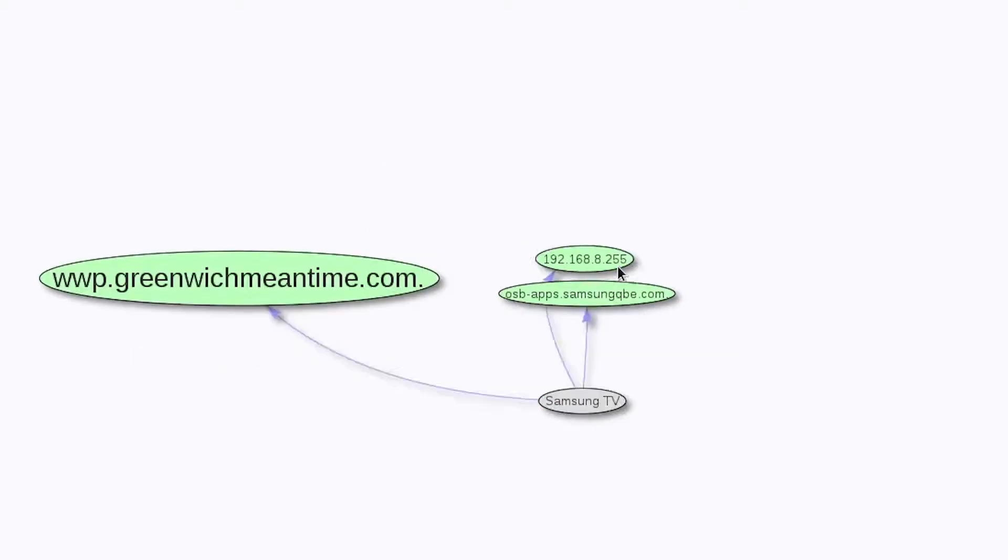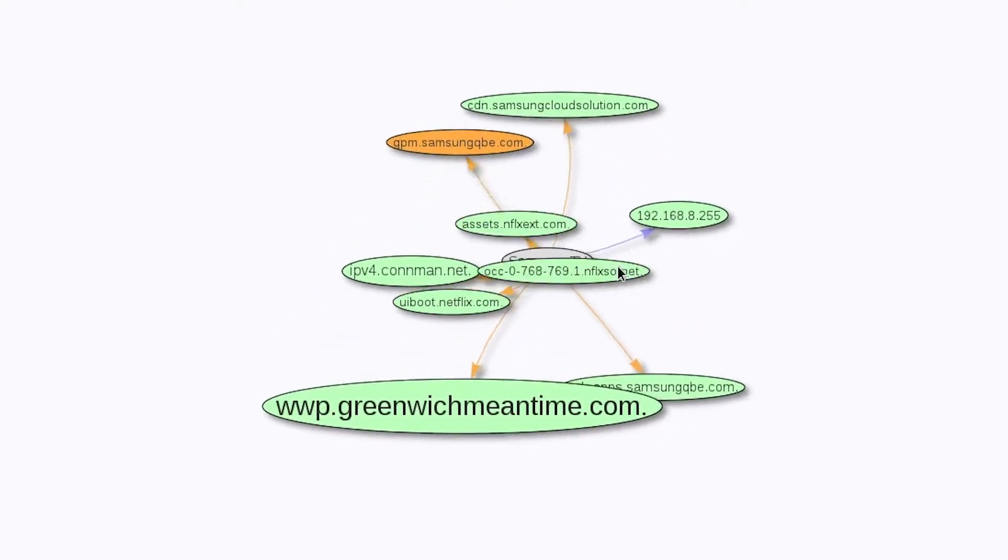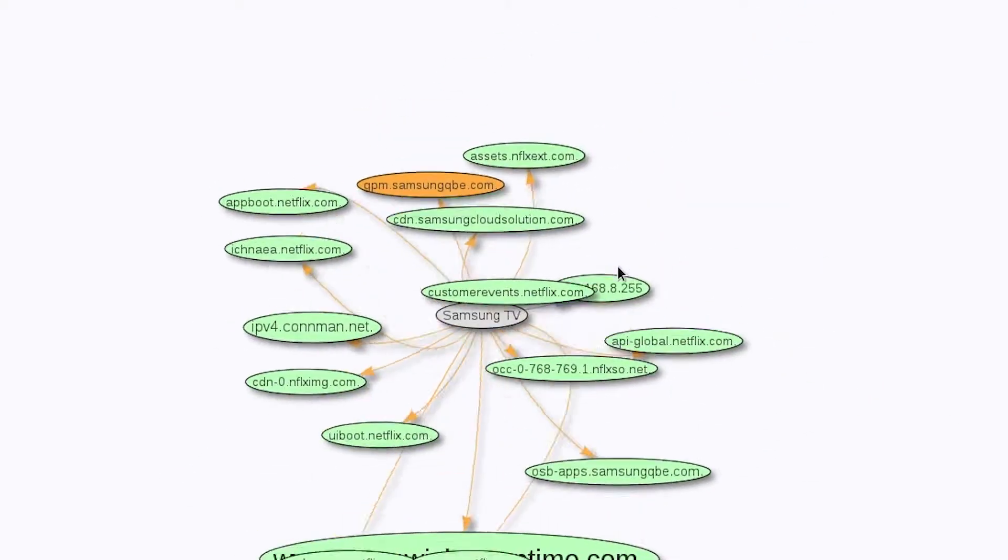SPIN is short for Security and Privacy for In-home Networks — software that gives the end user more control of their home network. SPIN monitors and visualizes data streams of all smart devices in the home network.